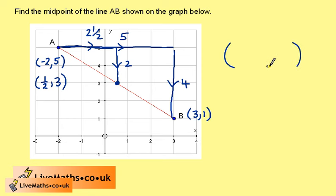So do the average of the x-coordinates, minus 2, add 3, divided by 2. And the average of the y-coordinates, 5 plus 1 divided by 2. And this gives us a half and 3.